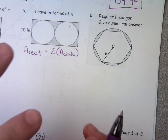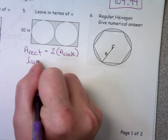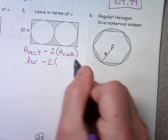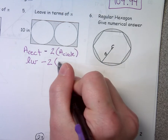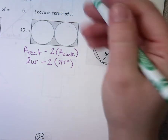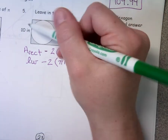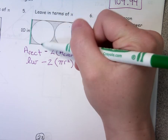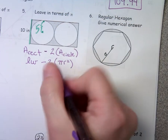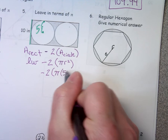Let's write down formulas. What's your formula for area of a rectangle? Length times width or base times height. Minus two because we have two circles — what's our formula for area of a circle? Pi r squared. Let's talk about the circle for a second. Does anybody know what the radius is? Five. I know it's ten all the way across, so the radius would be five. So I'm going to go minus two times pi times five squared.